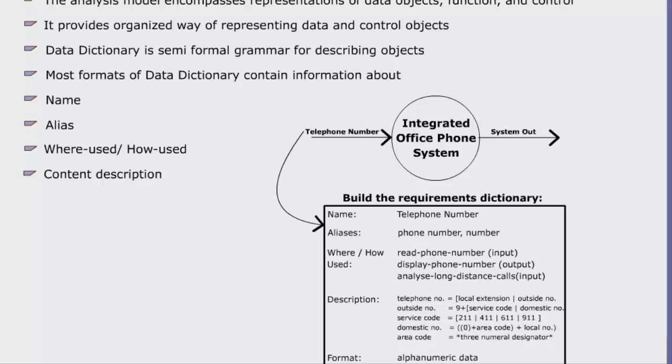Content description: annotation for representing content. Supplementary information: other information about data type, preset values if known, restrictions or limitations, etc.